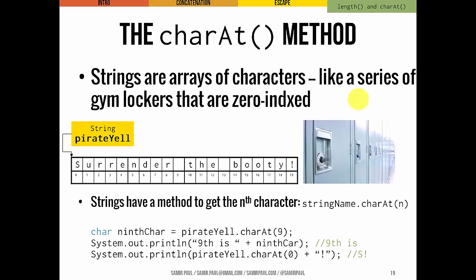We saw the metaphor of strings as a set of gym lockers where we stick one character in each locker. Strings are objects — they're not primitive data — and so they have methods we can use to work with them, just like other object types we've worked with, like scanners. One crucial method is charAt, which allows us to take a string and figure out what character is at a particular index. Here I've declared a variable called ninthChar of type char. Calling pirateYell.charAt(9) gives the character at index 9 — which turns out to be a space. So printing "9th is: " concatenated with ninthChar ends up with just "9th is: ".